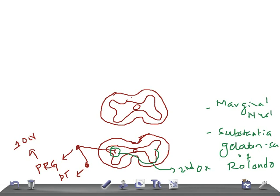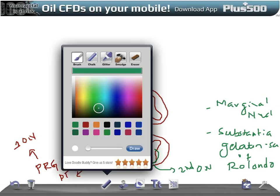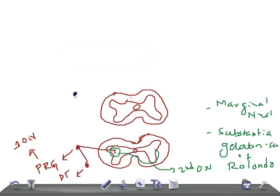Most of the fibers cross on the same side of the segment, and all the fibers pass through the medulla, pons, and midbrain, reaching the thalamus along with the fibers of the anterior spinothalamic tract. The first order neuron ends here at the chief sensory nucleus, and from this the second order neuron starts.